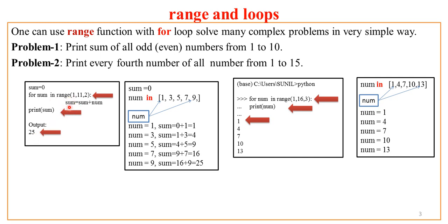Let's understand what this code does in the background. When sum = 0, a variable sum is assigned value 0. The range function has three arguments: the first is the start value, the second is the stop value, and the third is the step value. Python creates a list internally using the range function — it starts with 1 and always goes up to stop value minus 1, so here from 1 to 10.